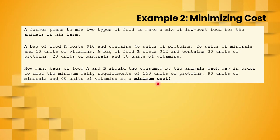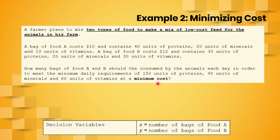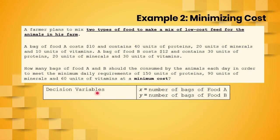To solve this linear programming problem, we will first convert it to an LP model. We decide on our decision variables. Notice that there are two types of food to be mixed: food A and food B. So we let x be the number of bags of food A and y be the number of bags of food B.